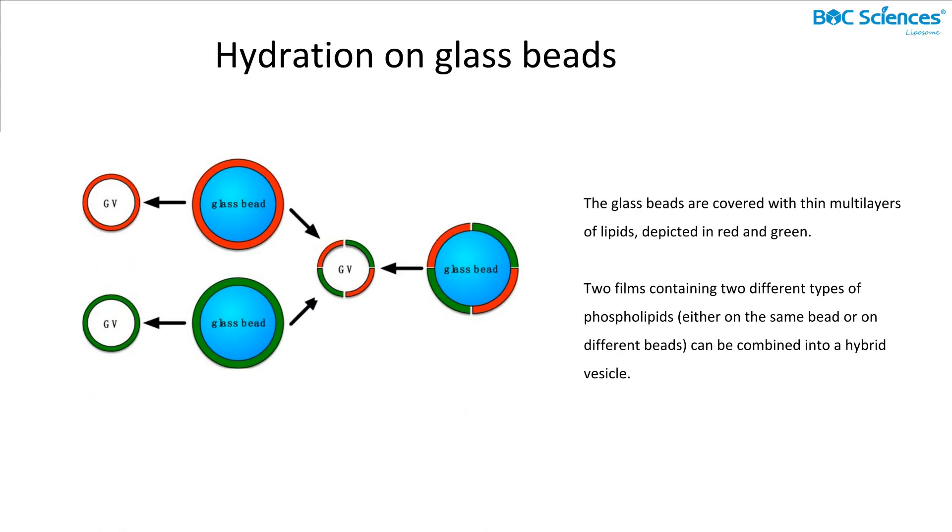Eleventh, hydration on glass beads. In many studies, glass beads are used differently to produce liposomes. In the rapid method developed by Nureen, GUVs were prepared upon the hydration of lipid-coated beads. Here, lipid-coated glass beads were produced by directly adding the lipid solution onto the beads and subsequently evaporating the solvent.